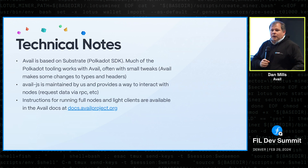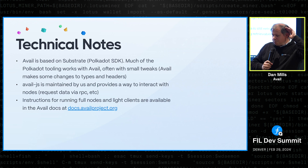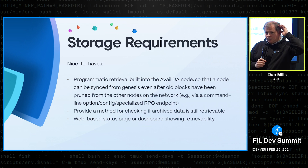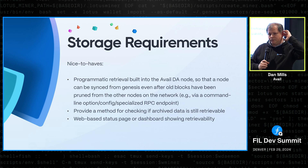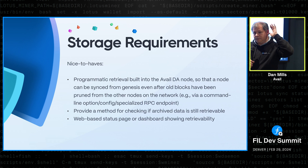Question: How would you imagine the Avail network compensating the Filecoin network for storage services? And second, is there anything in the Avail stack itself that would functionally require going back in history and checking something, or is this more oriented towards indexers, explorers, and other participants external to Avail?